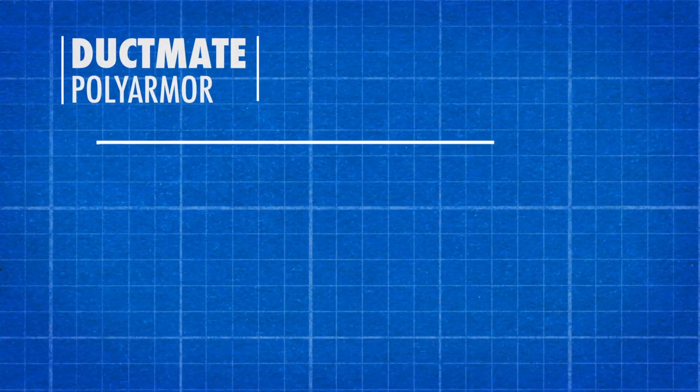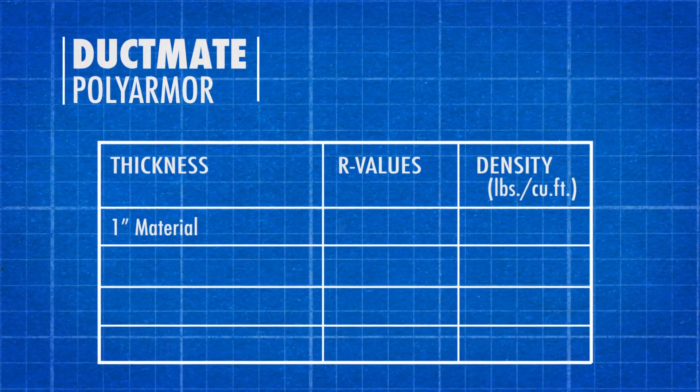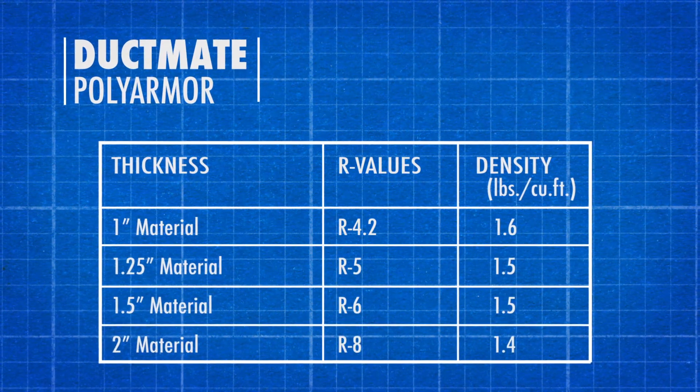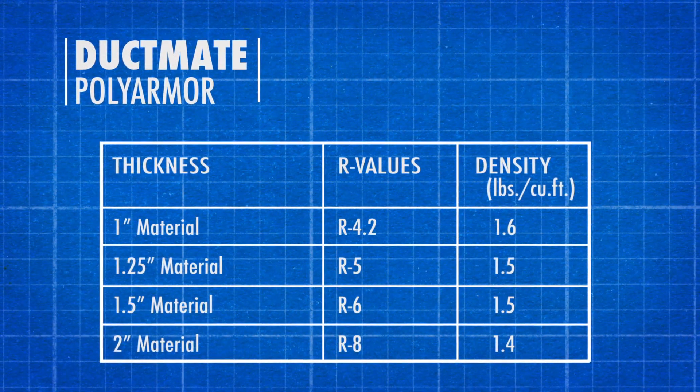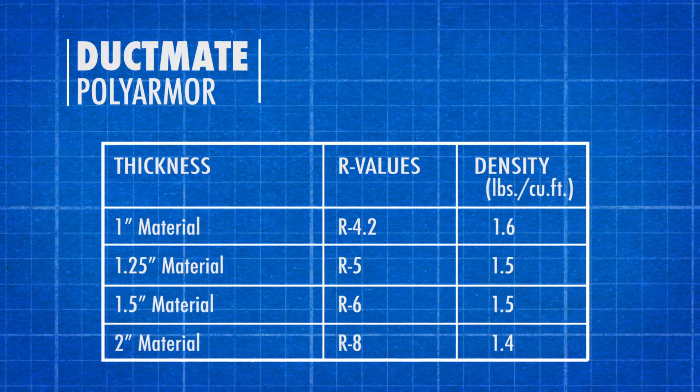With a rating of R4.2 at 1 inch, the material's lightweight design reduces the overall weight of the duct system, reducing installation costs.